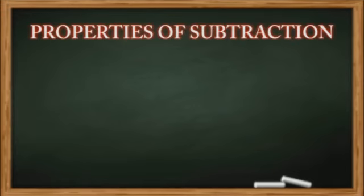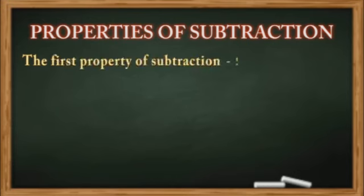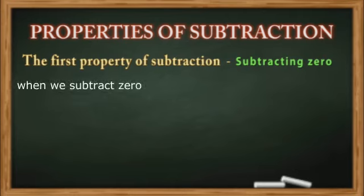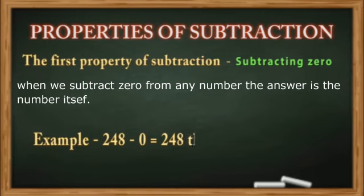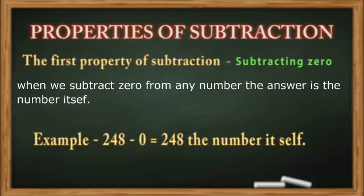Dear students, before subtraction we should know the properties of subtraction. The first property is subtracting zero: when we subtract zero from any number, the answer is the number itself. For example, 248 minus zero equals 248. Whenever we subtract zero from any number, the answer is the number itself.